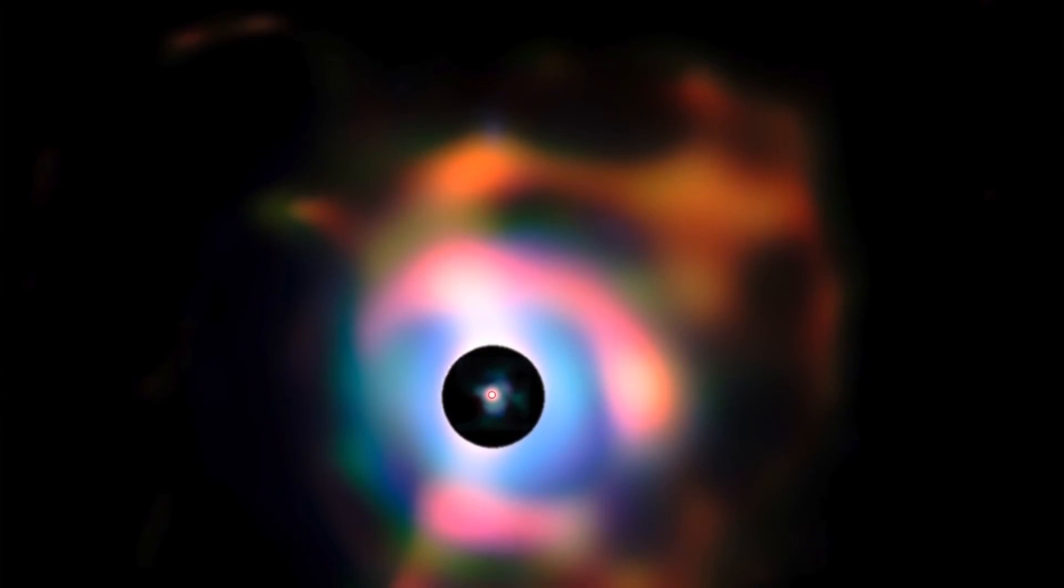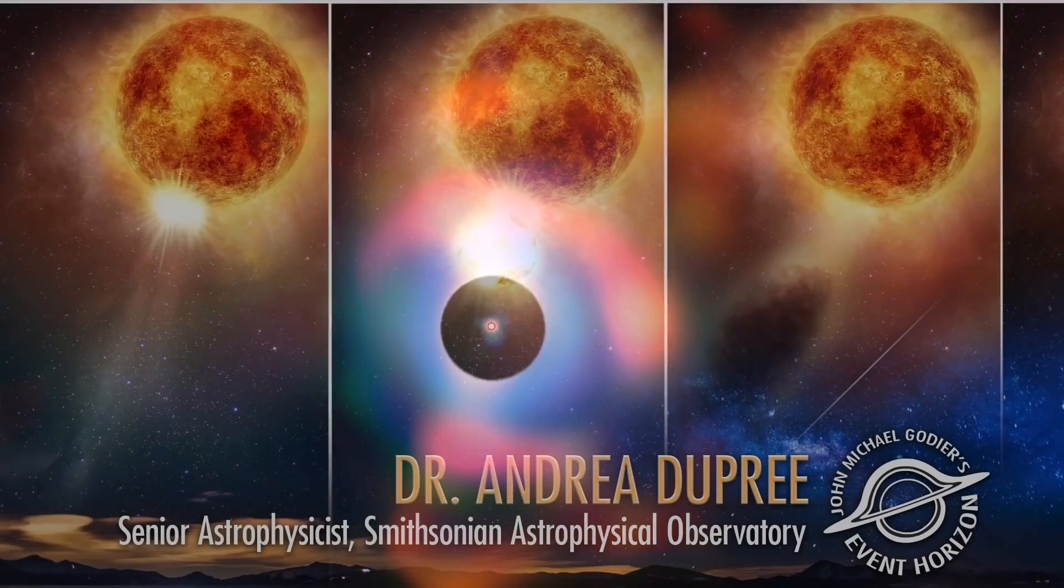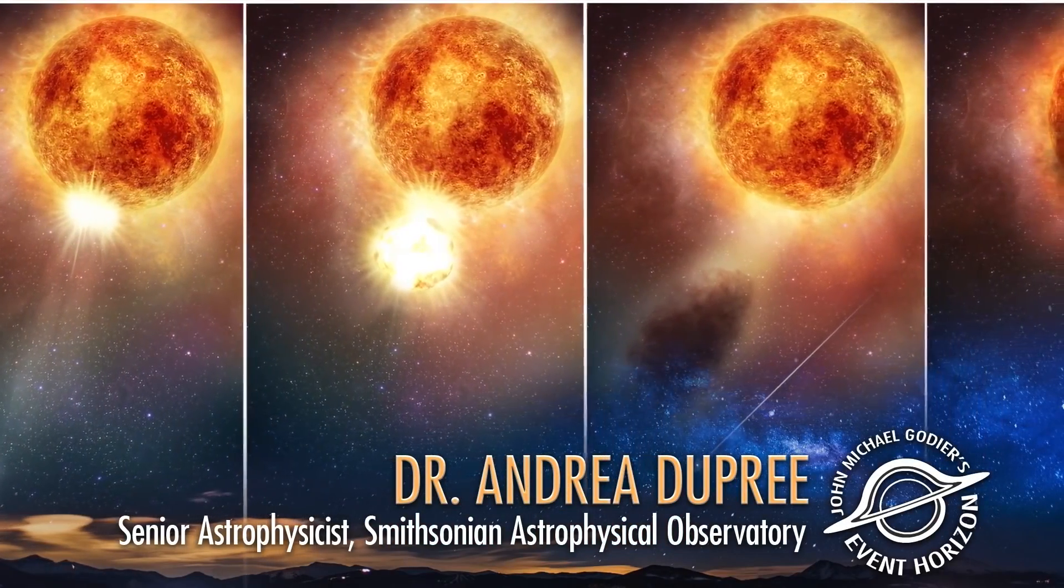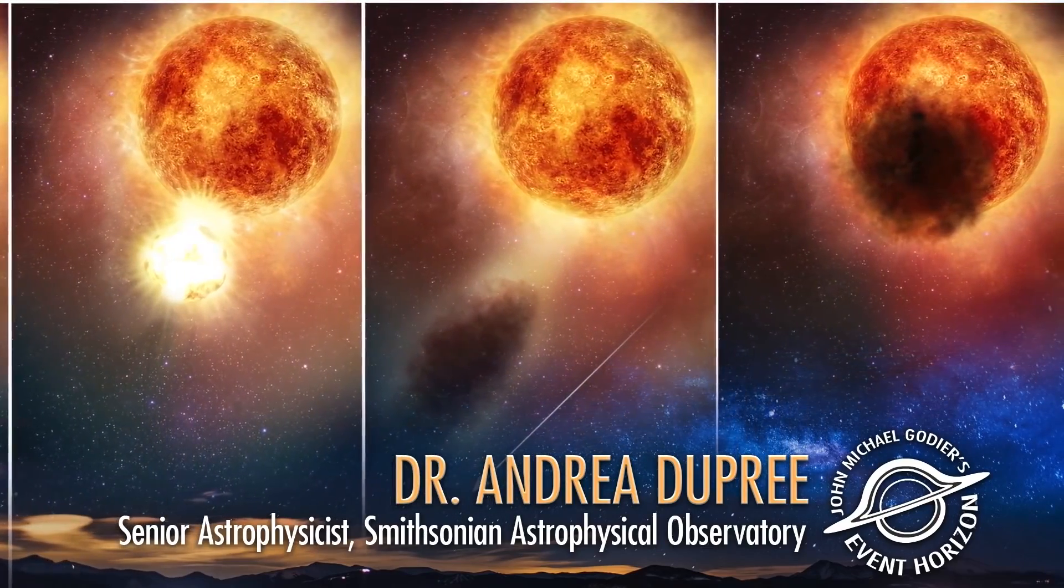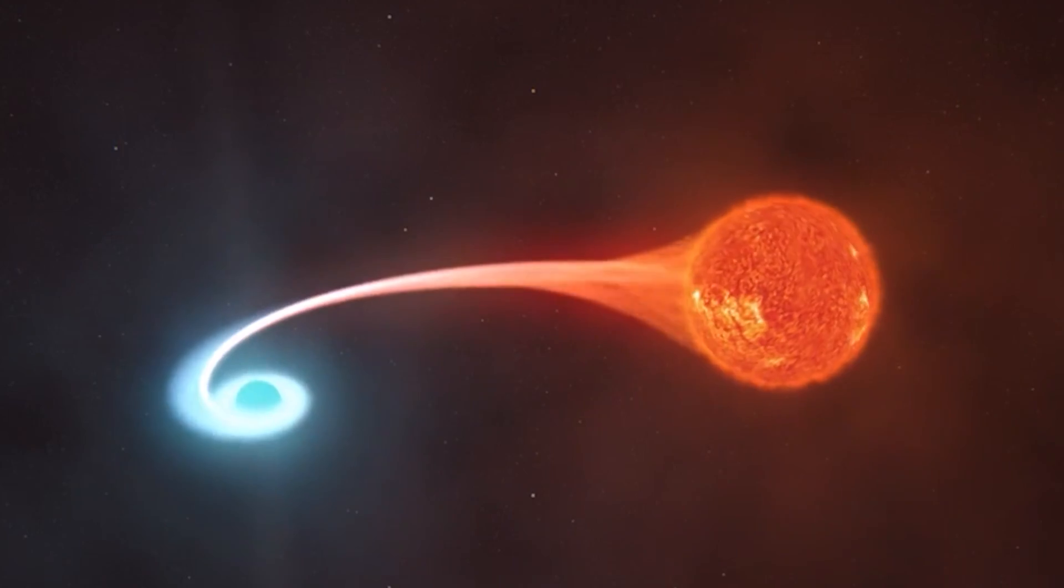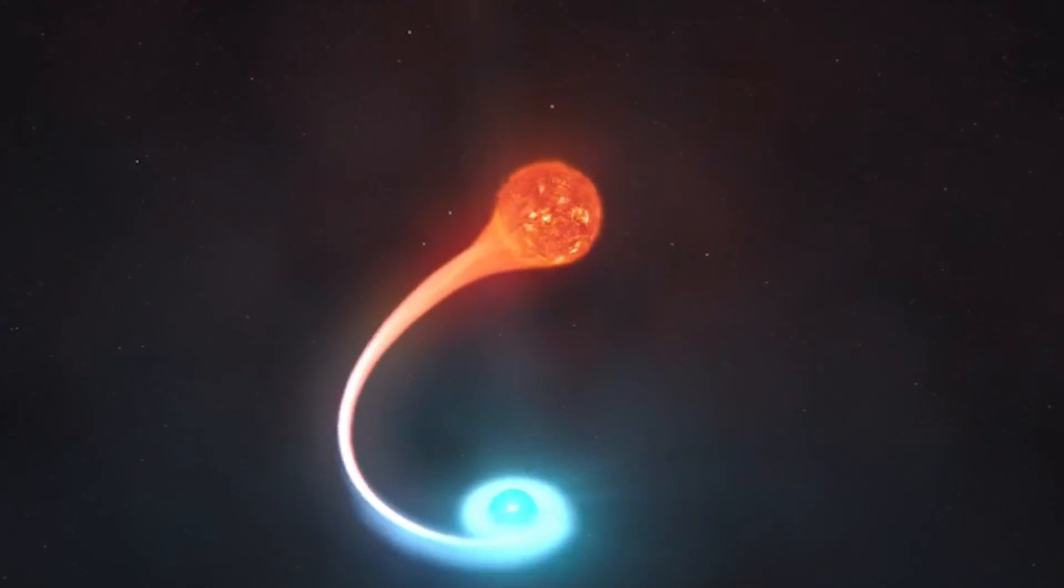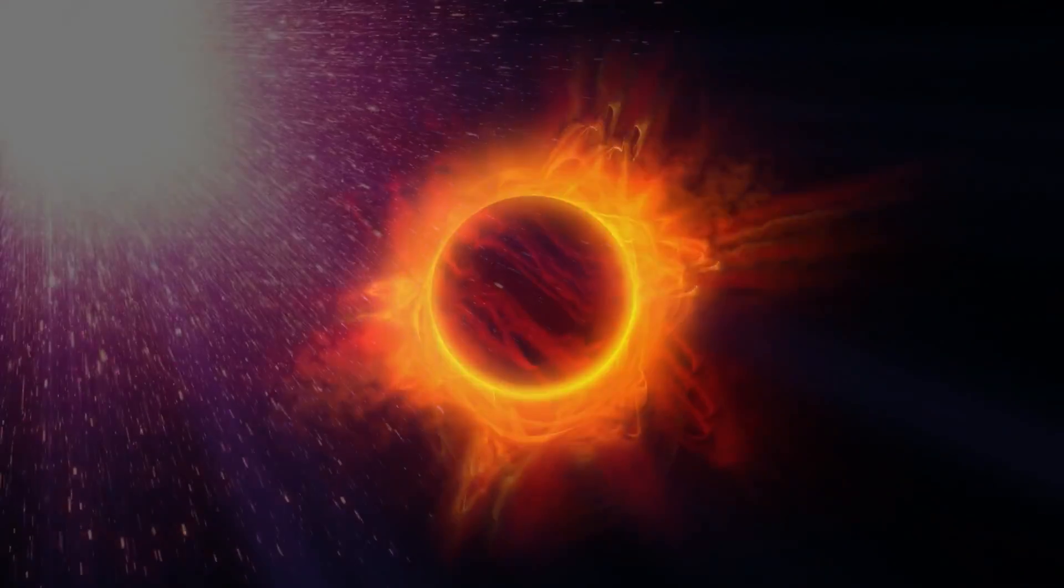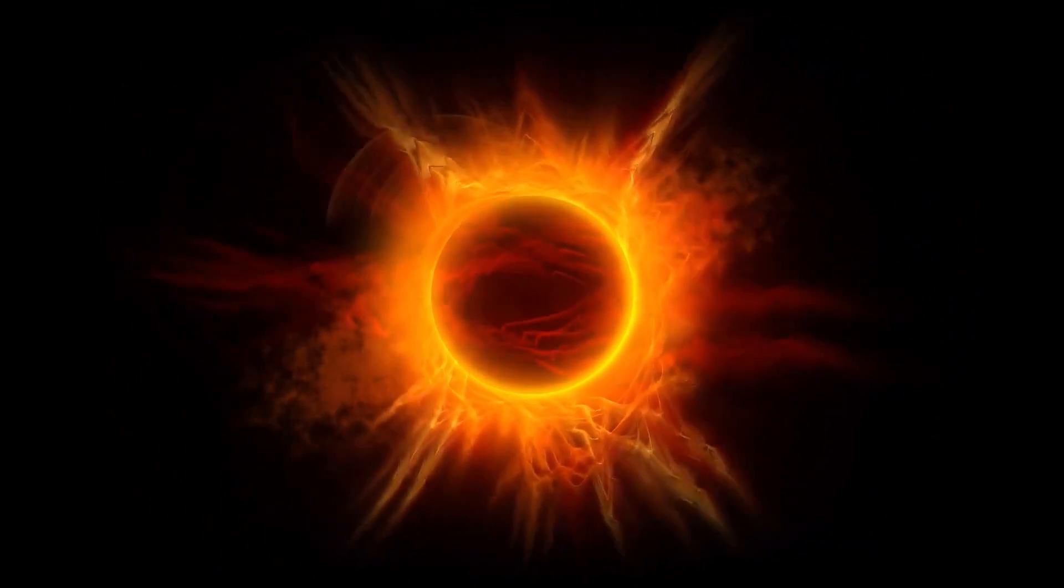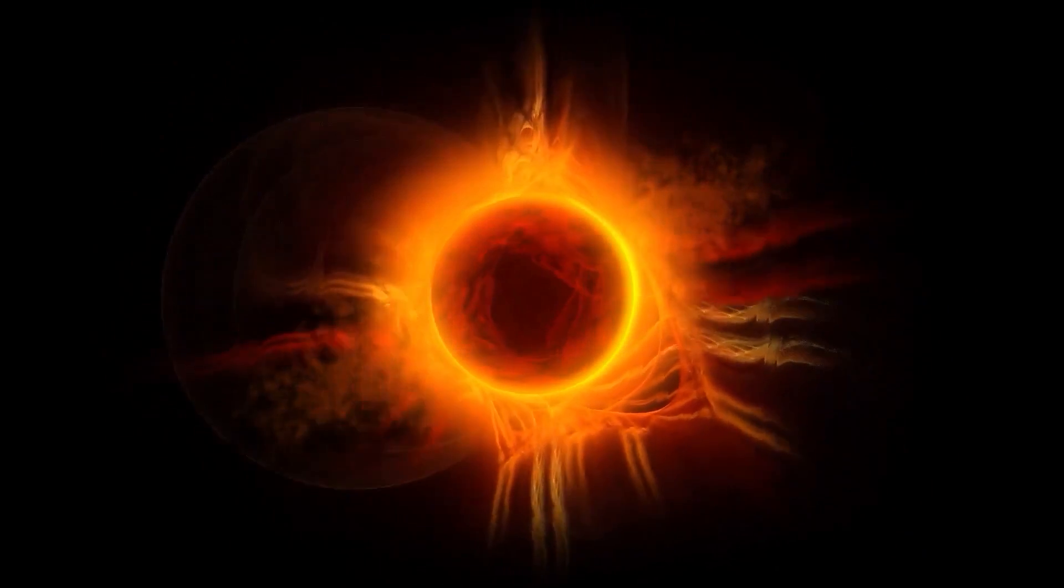Betelgeuse won't necessarily explode soon. These new observations provide clues about how red stars lose mass at the end of their lives as their nuclear fusion furnaces burn out before exploding as supernova. However, Betelgeuse's surprising behavior is not proof that the star will explode soon, so the fact that it has lost mass is not necessarily a sign of an imminent explosion.